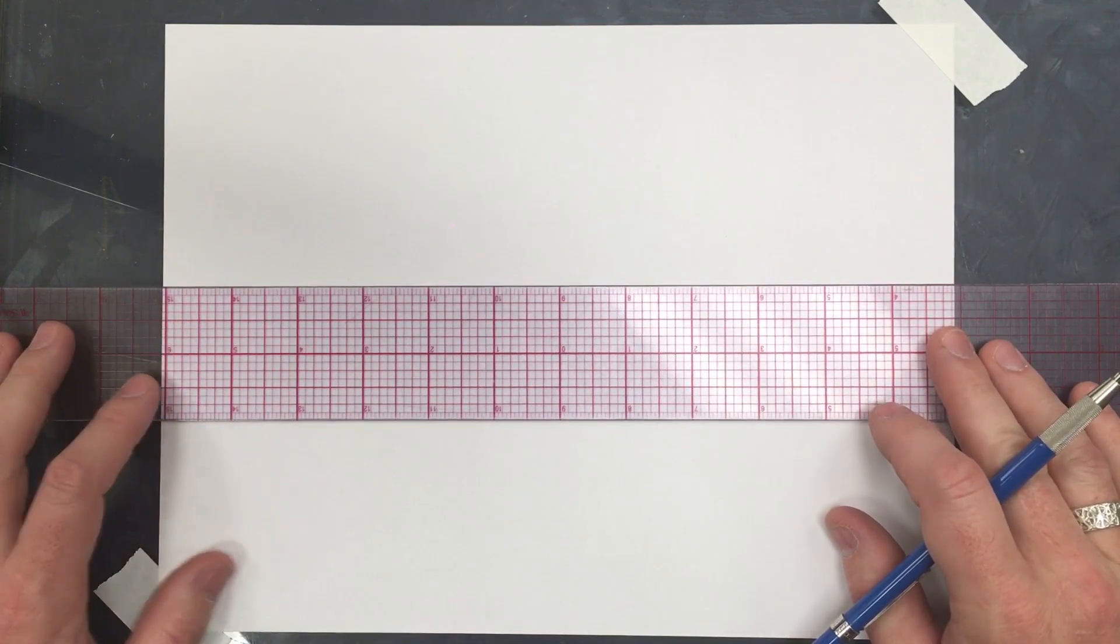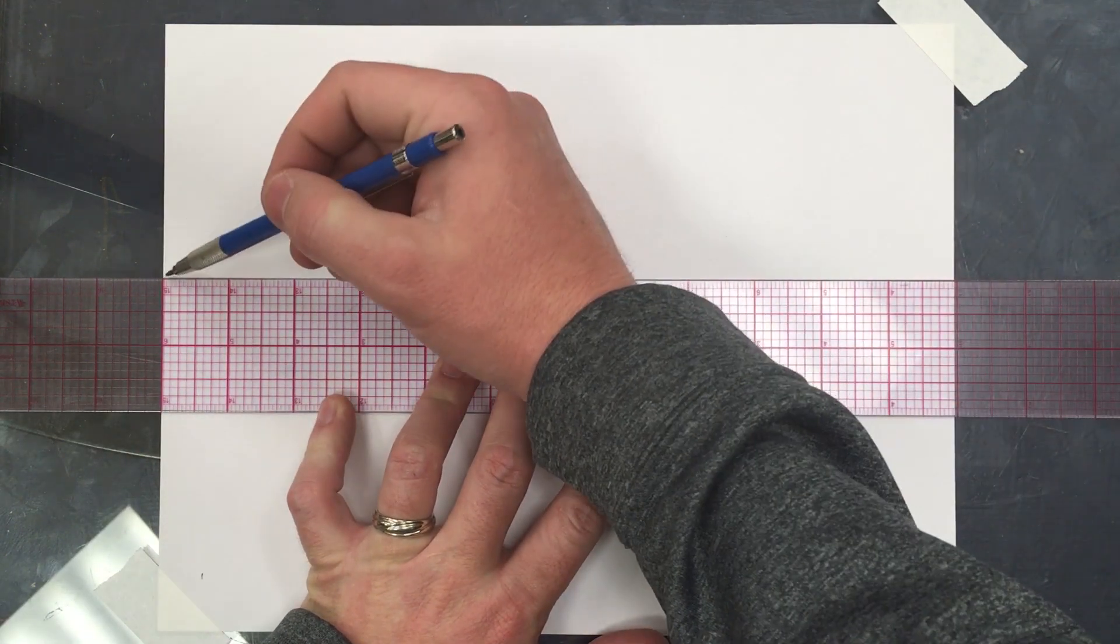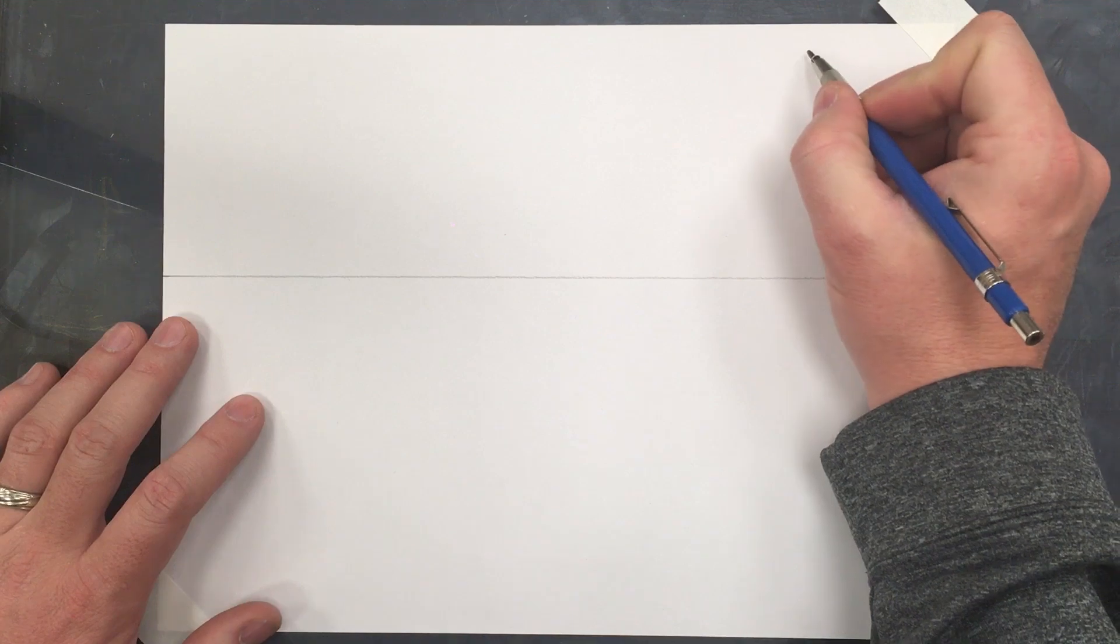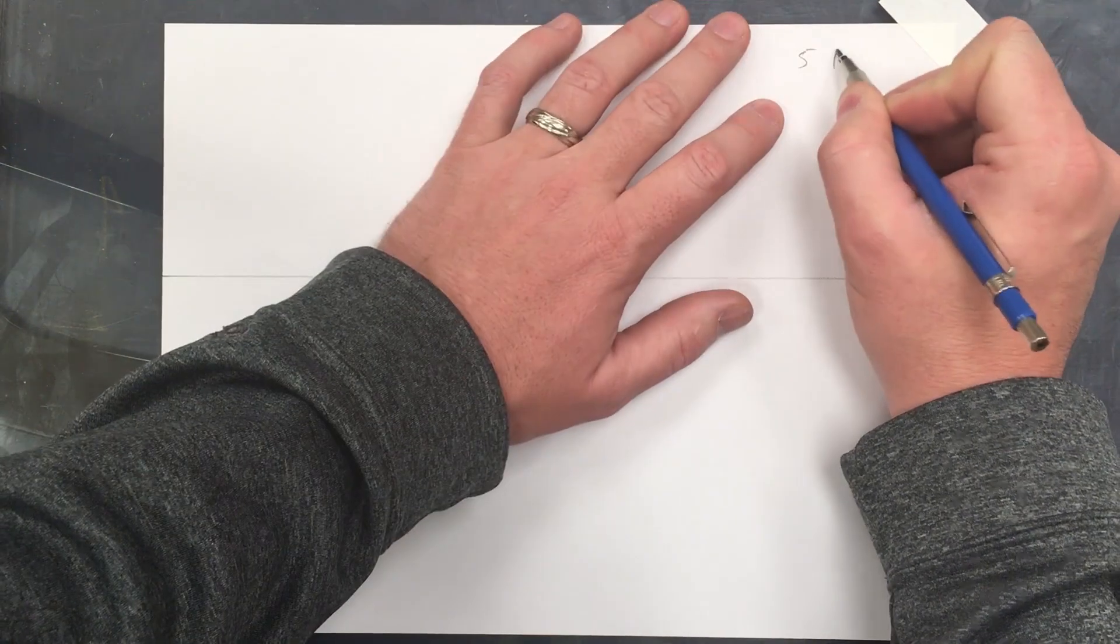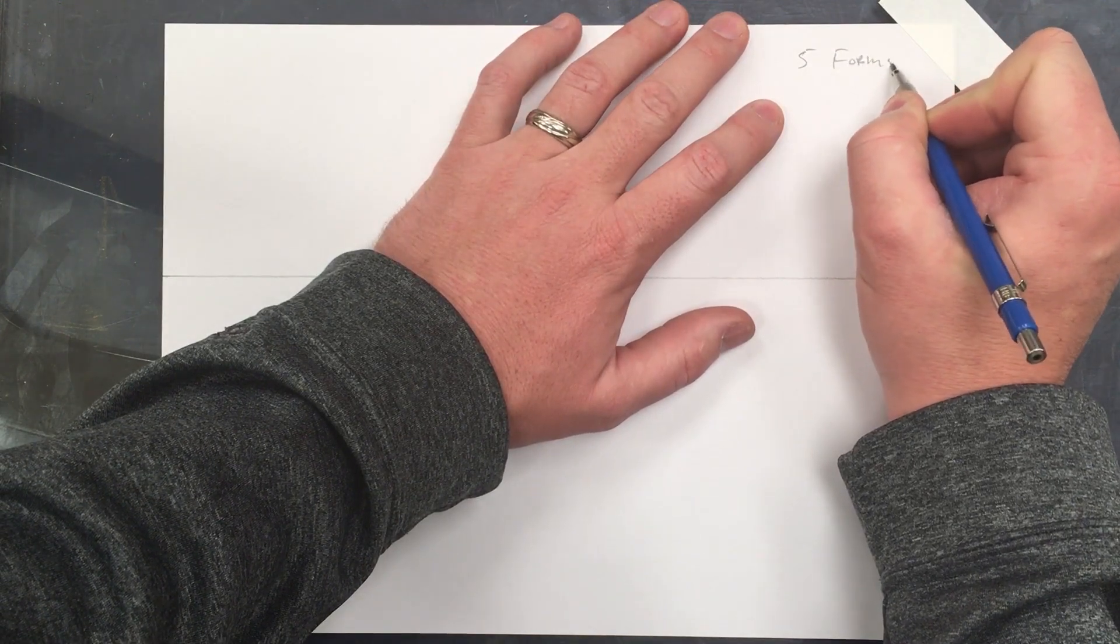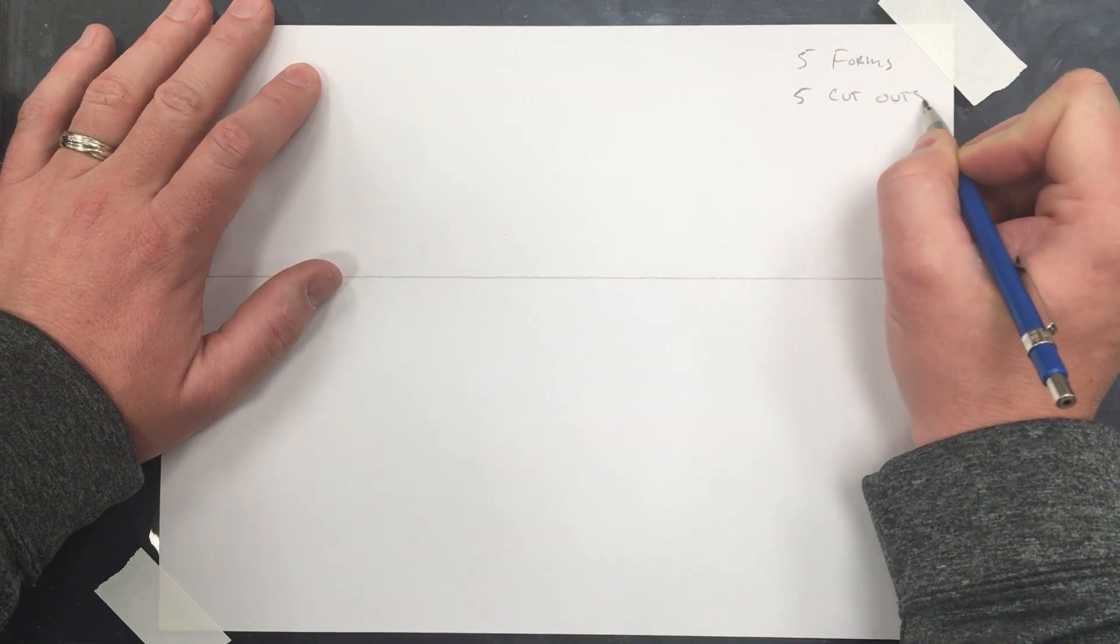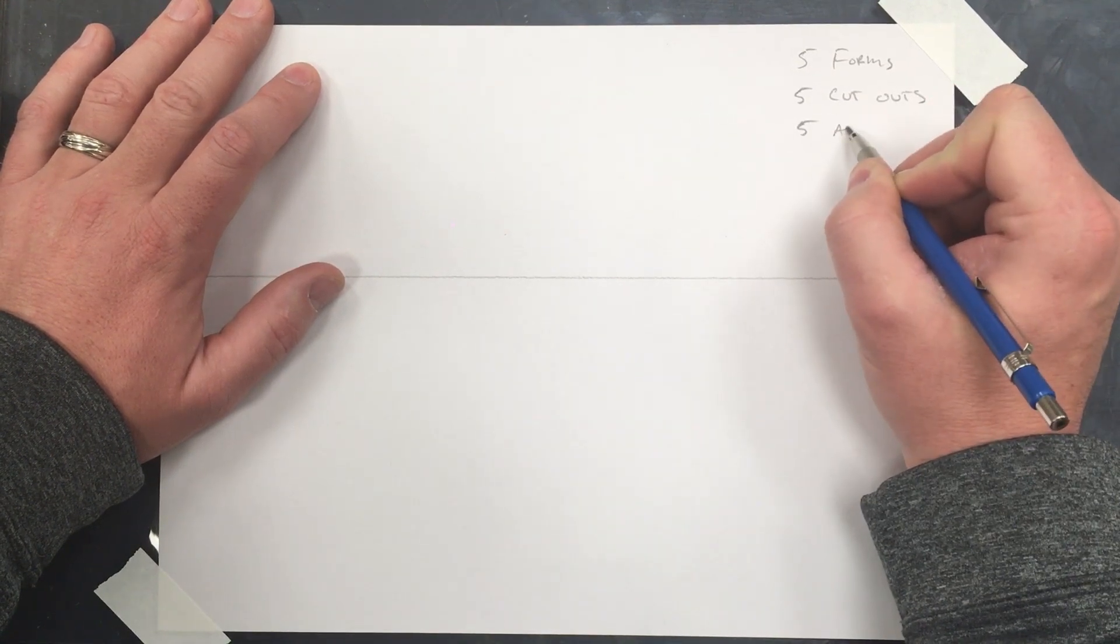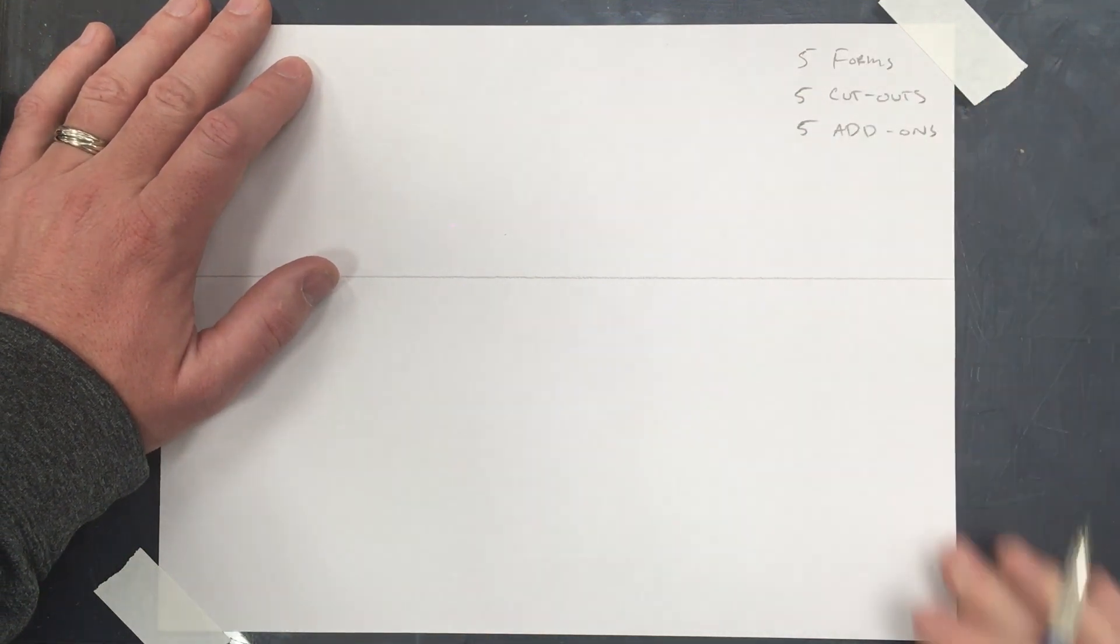Okay, the next step in two-point perspective is our first project that we do in class. This is a two-point perspective, and the requirements are five forms stacked up, five cutouts and five add-ons, and I'll explain what those are.